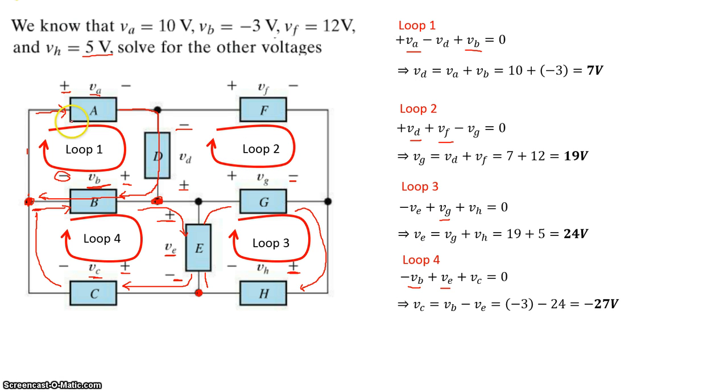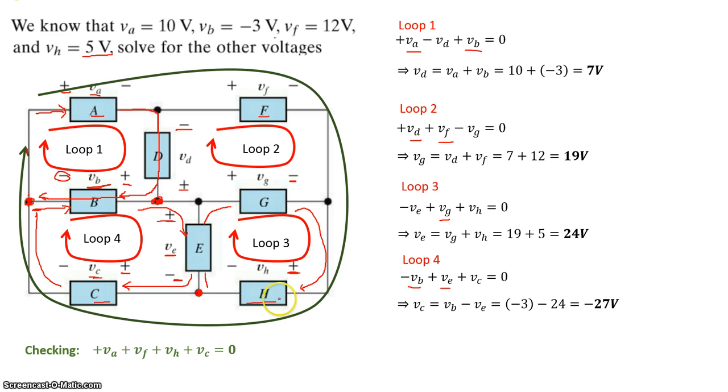Now we know all the voltages. There are more than just these four loops in the circuit, so let's use one of these extra loops to see if we did this calculation correctly. Let's choose the outermost loop consisting of elements A, F, H, and C. For that loop, if I start at node VA, I see plus VA, plus VF, plus VH, plus VC, and I get back to the original node, equals zero.